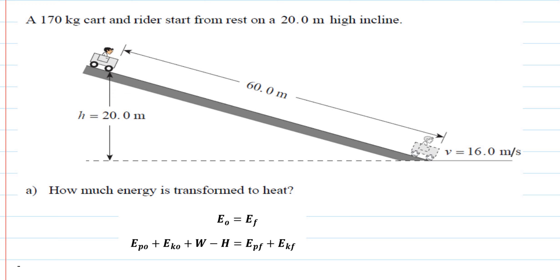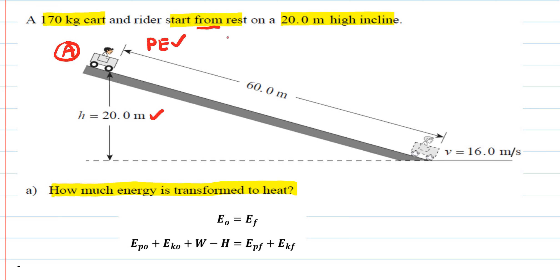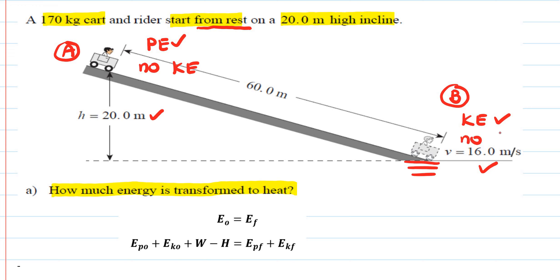Let's look at another variation of the work-energy theorem. A 170 kilogram cart and rider start from rest on a 20 meter high incline and we want to find how much energy is transferred to heat. At position A (the beginning), there is potential energy but no kinetic energy since it starts from rest. At point B (the bottom), there is kinetic energy but no potential energy.